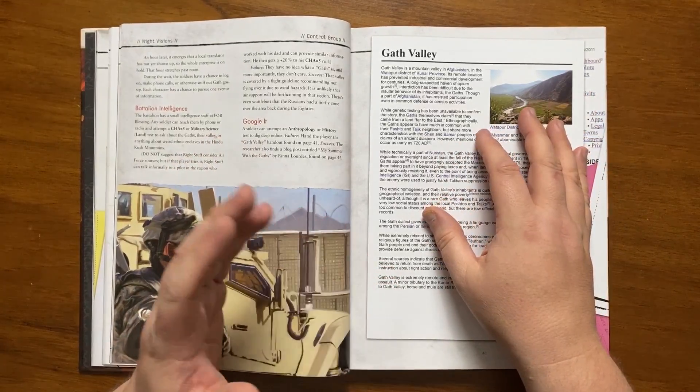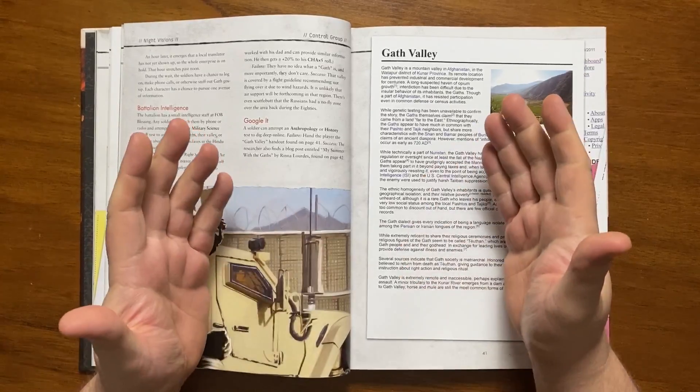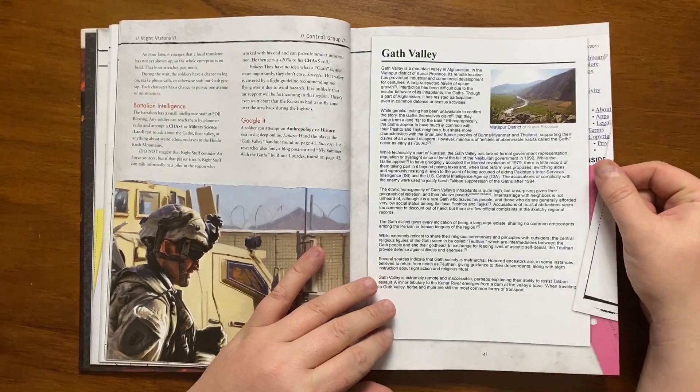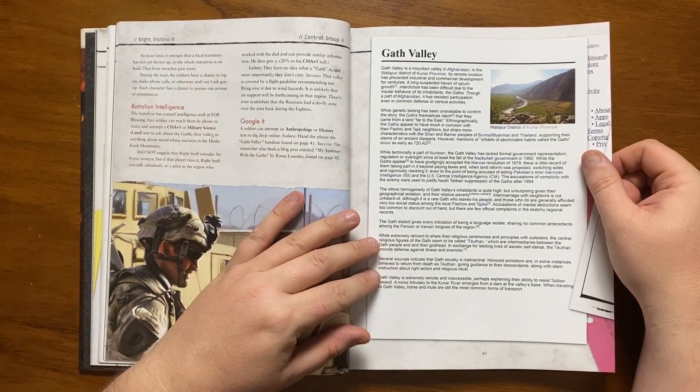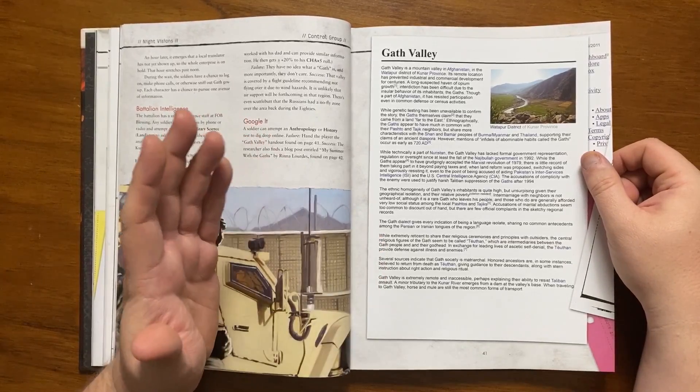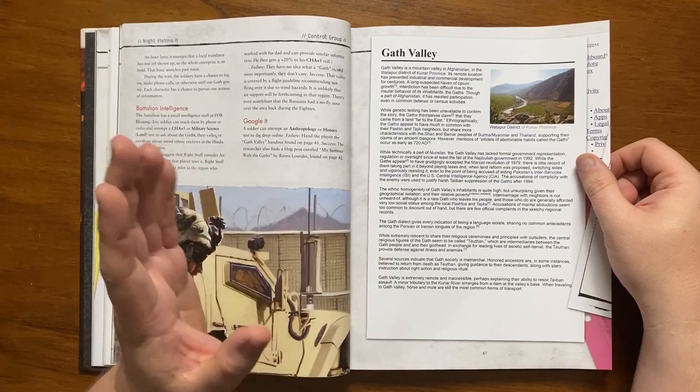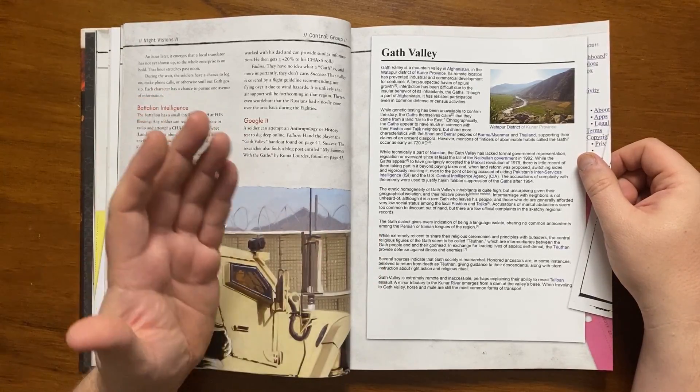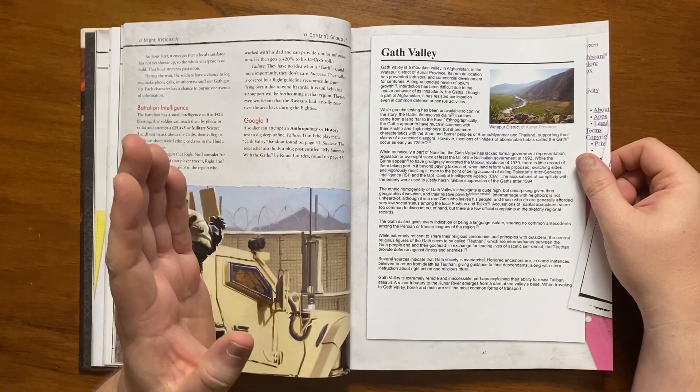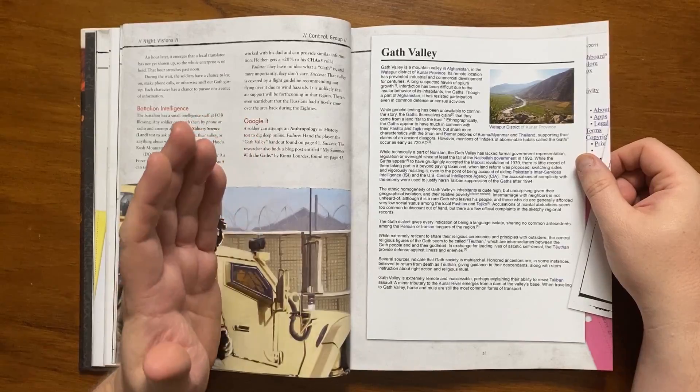If they do an internet search, they can find two important articles. One with a failure, both with success. The first is a Wikipedia-esque informational document that provides some good information. They can discover that the Gath have long been suspected of opium growth, and that they claim to have come from a land far to the east. Accounts of infidels of abominable habits called the Gathi reach back as far as 720 AD. They are geographically isolated and poor, and on occasion they leave their people and head out into the world. The central figures of their religion are known as the Teuthan, which is said to be intermediaries between the Gath and their god. Their society is said to be matriarchal.